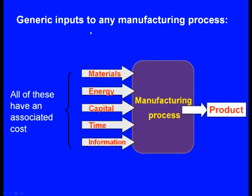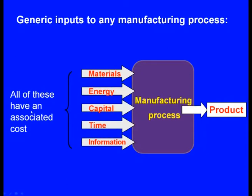Finally, let us look at the economics of casting. Generic inputs to any manufacturing process include: material cost, energy cost, capital cost, time involved, and information — for example, technology licensing costs paid to others. All of these have an associated cost on the manufacturing cost.